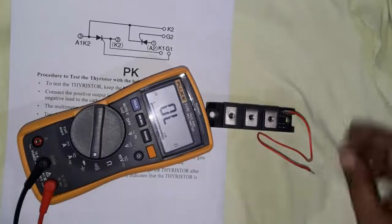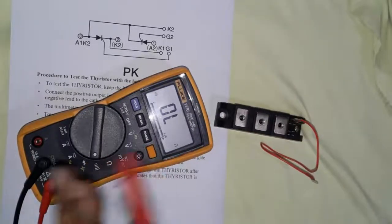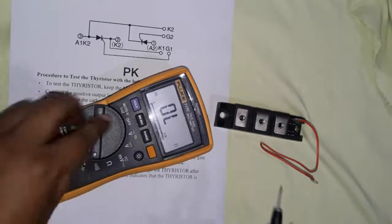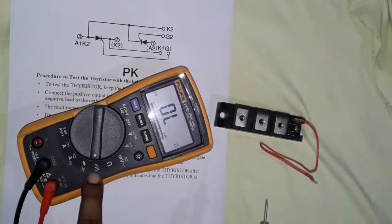How to check SCR or Thyristor. We are using a digital multimeter set to continuity mode.